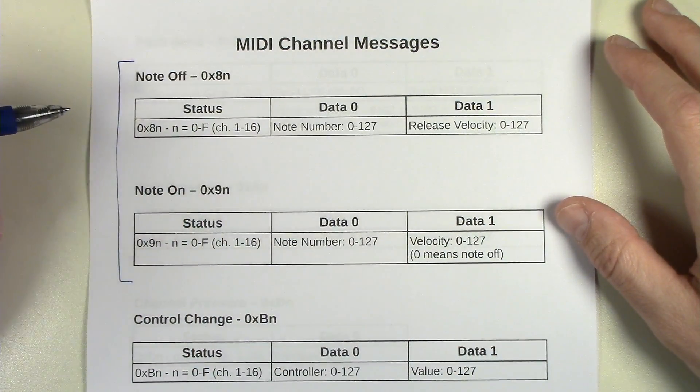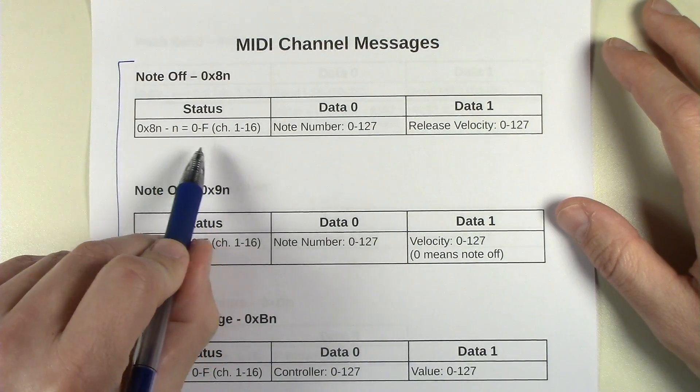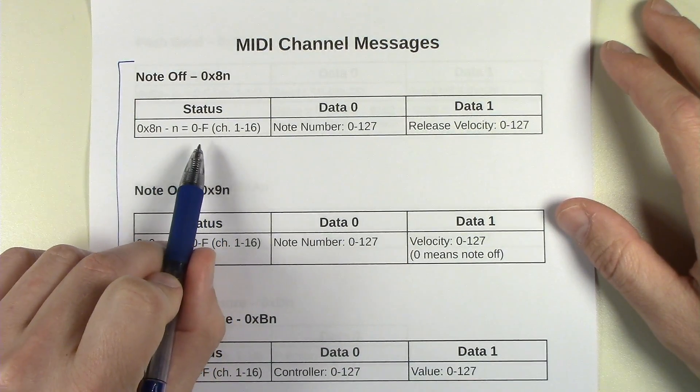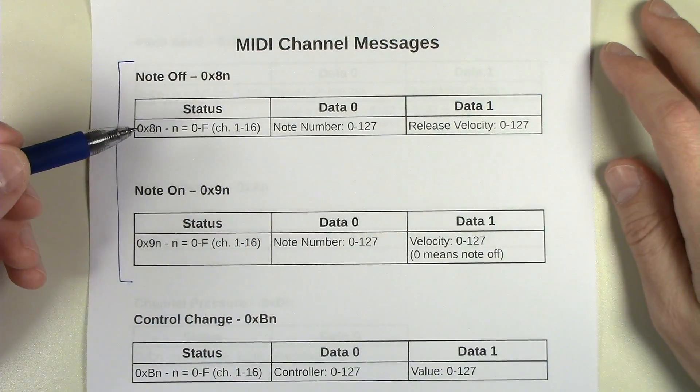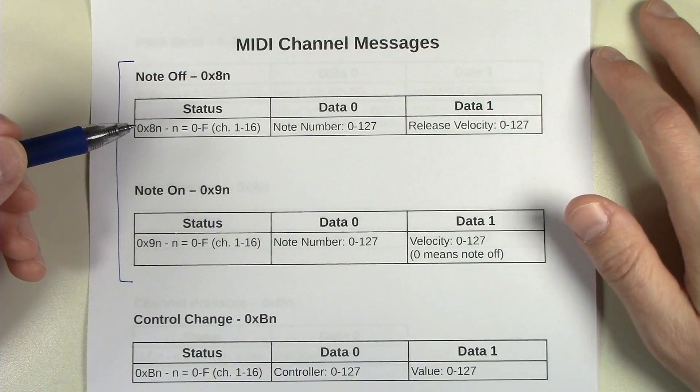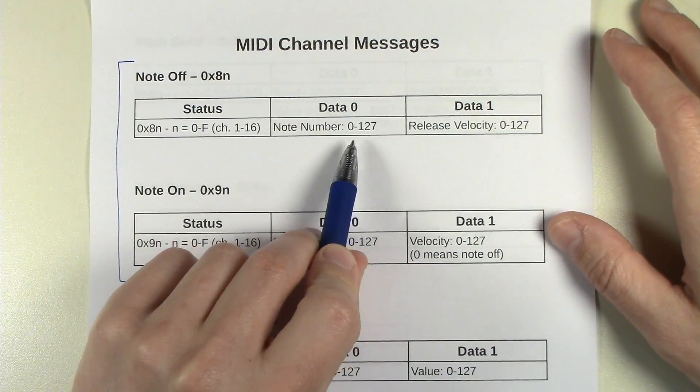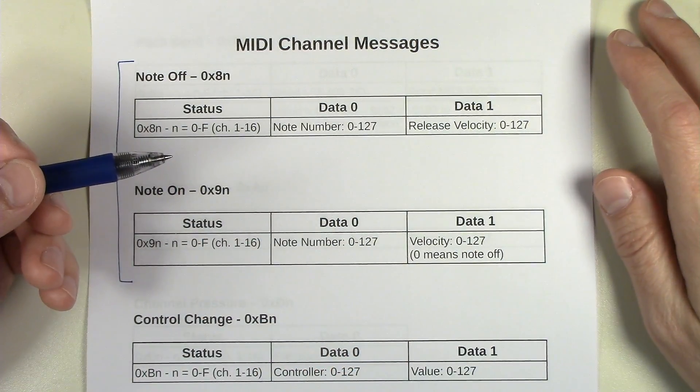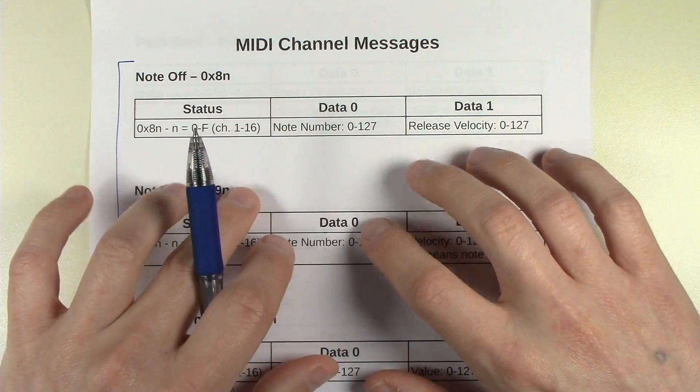Note Off starts with an 8, and then the channel is the lower 4 bits. 0 through F is channel 1 through 16. And the note number is 0 to 127, so there's 128 actual notes. These are the keys on the keyboard.